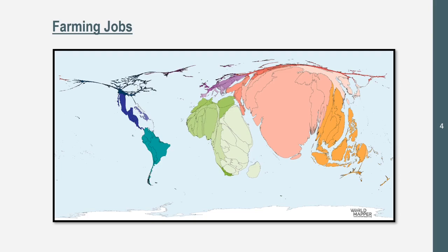What you see on the screen is the areas of the world with the most farming jobs — farmers as a share of the population. Southern Asia has the most, and Eastern Africa comes in a close second. If you look up 'cartogram,' you can probably find this map as well. The shrunk, skinnier countries are the ones with fewer farmers per their population.